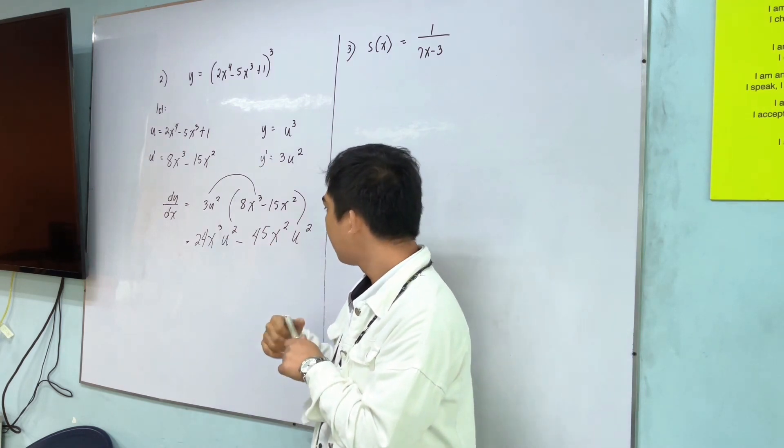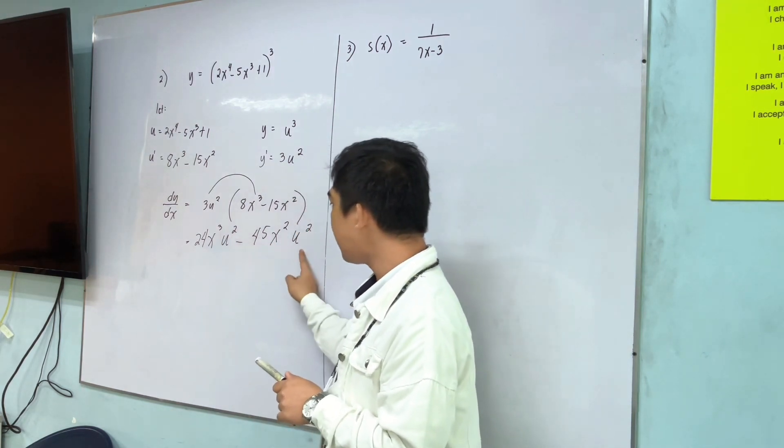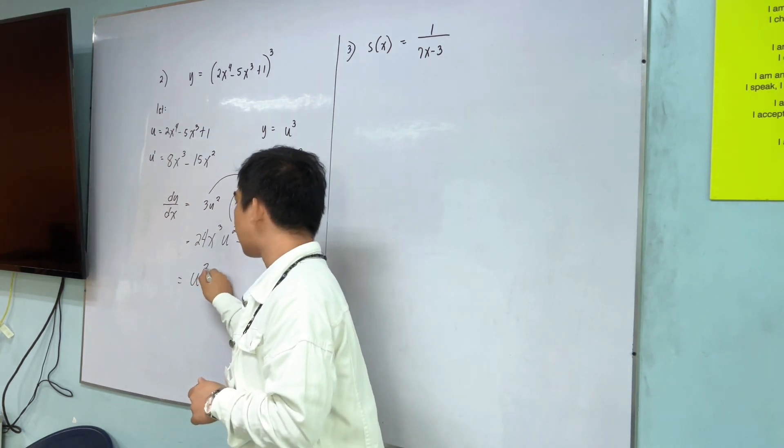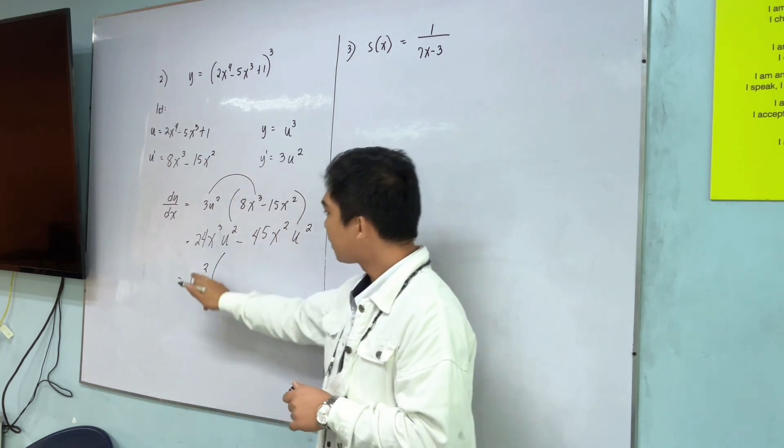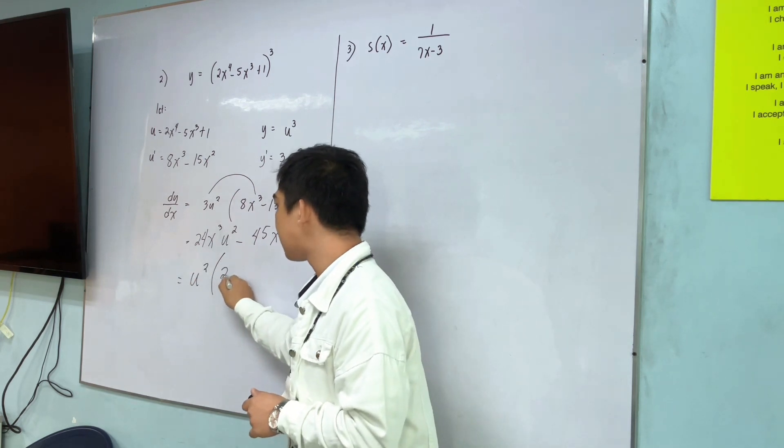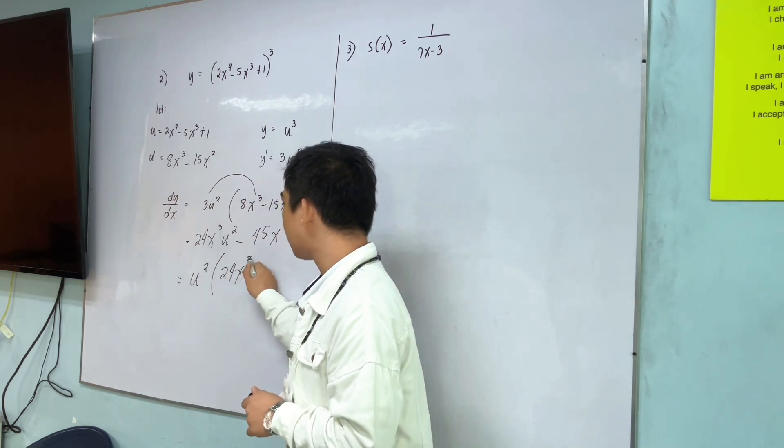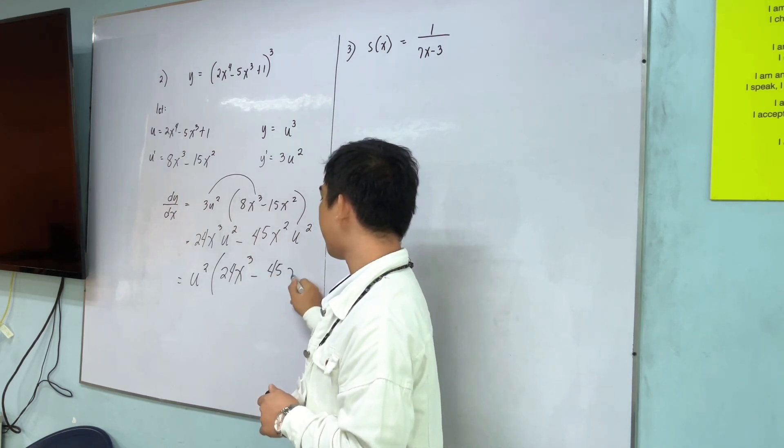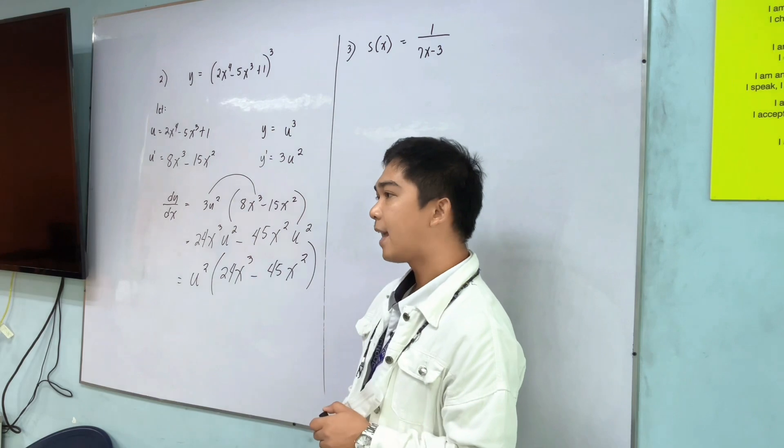Factor out muna natin. Ang common factor natin ay u squared. So, ilabas natin si u squared. Tapos, kupahin na lang si 24x cubed minus 45x squared. Ayan.